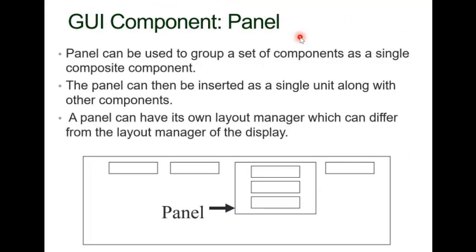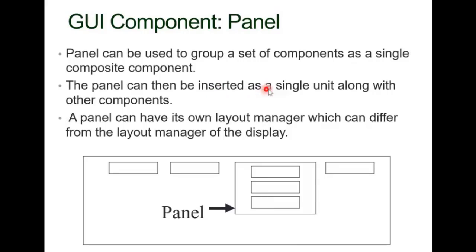The panel is very important to understand. The panel can be used to group a set of components as a single composite component. For example, we have three buttons, and we want to put these three buttons under the panel — so those three buttons together are considered as a single composite component. Using the panel, we can do these things. The panel can then be inserted as a single unit along with other components.